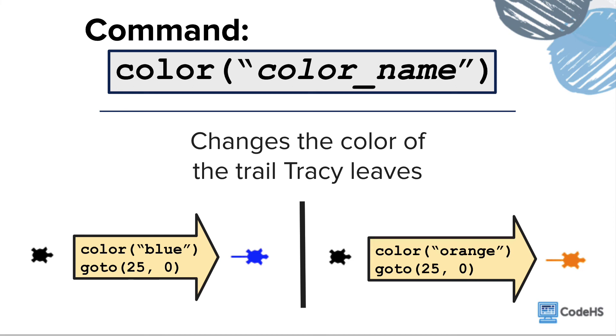Tracy and her trail will change to that color for all future commands. We've already seen Tracy draw purple lines on her carnival map, and a red nose on the clown, and now you'll be able to use any color you want in your Tracy programs. Now let's get some lunch.